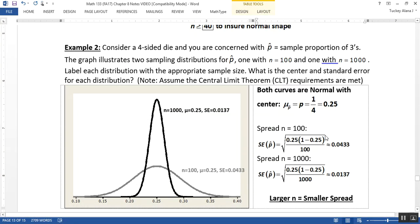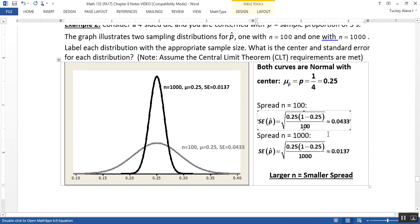So that tells me that the larger my N is, the smaller the spread is, which shouldn't be any great shock to us because we already learned that in 8.1. And so I've labeled the graphs appropriately. So this black one here, that's the one where N is equal to 1,000, because it has a smaller standard error, the smaller spread.